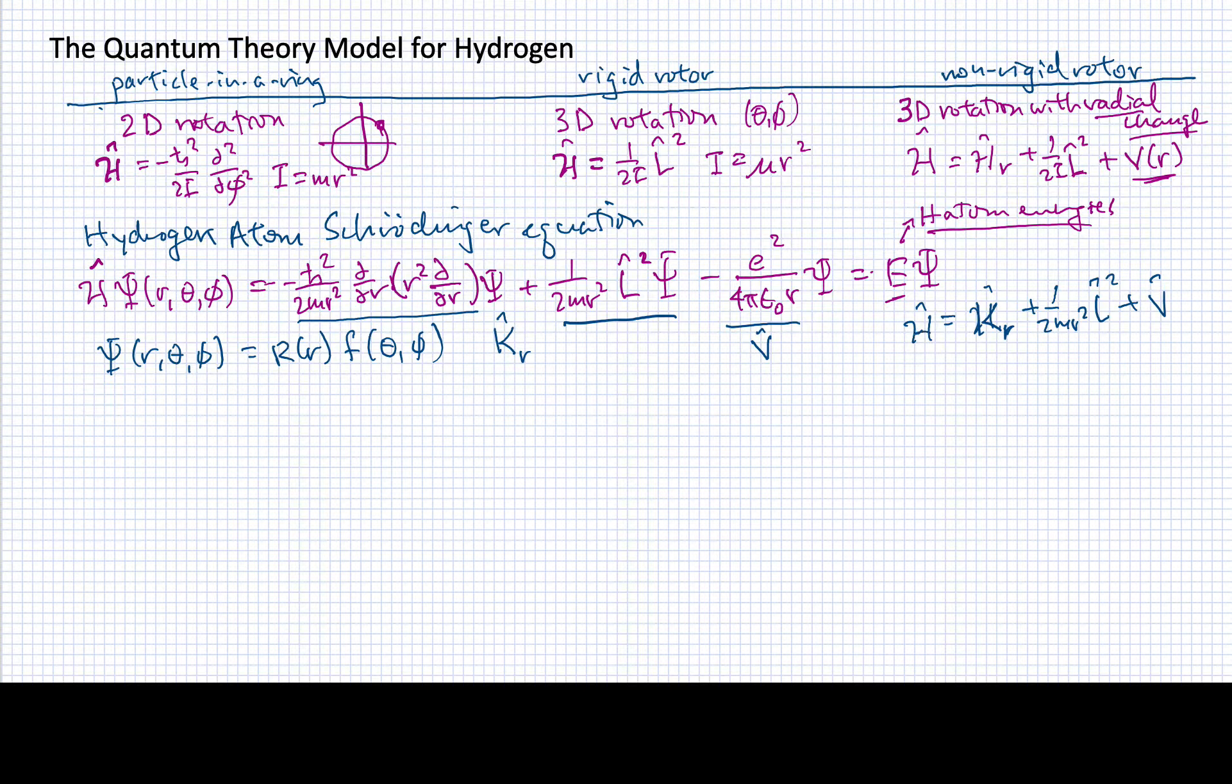I want to note that this kinetic energy part only affects the radius, so it's only going to impact the r of r part. The angular momentum operator is purely about the angles theta and phi, so it will only operate on the f part.